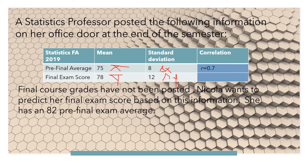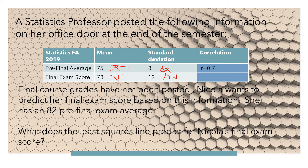The final score grades have not been posted. Nicola wants to predict her final exam score based on this information, and she has an 82 pre-final exam average. What does the least squares line predict for Nicola's final exam score? Using these values, we would like to predict her score, but first we must find the regression line using the five values: x-bar, y-bar, sx, sy, and r.